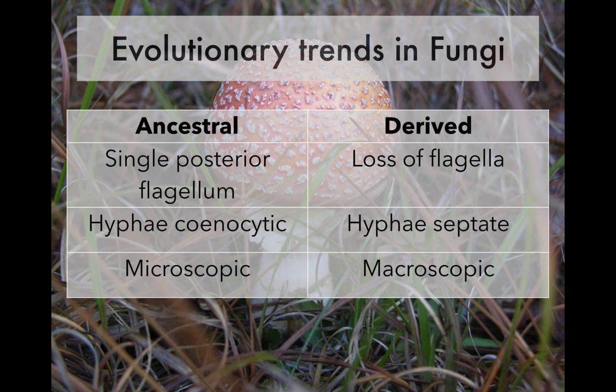In the ancestral lineages of fungi — the three lower phyla — the hyphae are coenocytic, meaning there are no cross walls or septations between the nuclei. The hyphae are just collections of nuclei that can interact with each other, all expressing and transcribing genes with nothing limiting what any nucleus can do. In more derived lineages, the hyphae become septate, with cross walls between nuclei, much more carefully arranged.